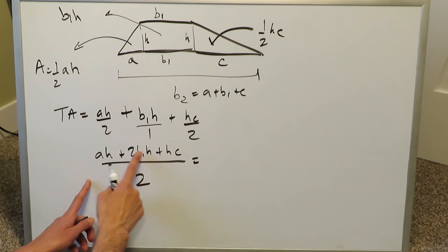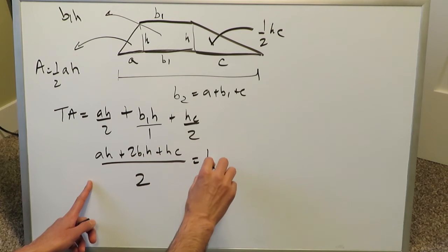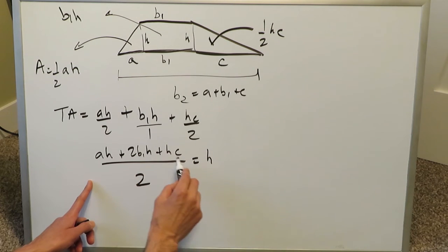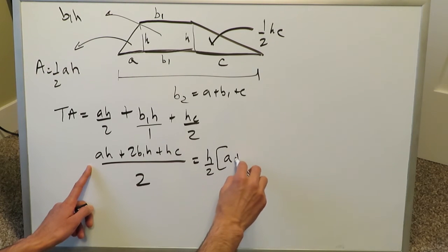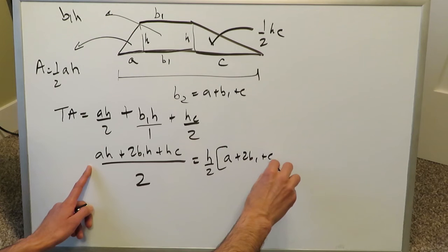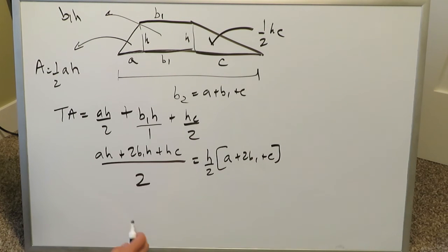When you look at this, there's a commonality you see, and the commonality is h. You can pull the h out, isolate it, along with its fraction 2. What you have left over here, the numerator is a plus 2b1 plus c.